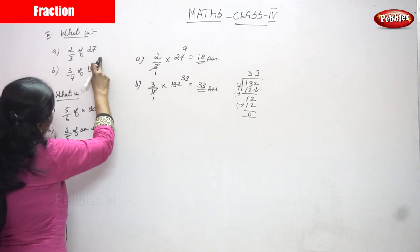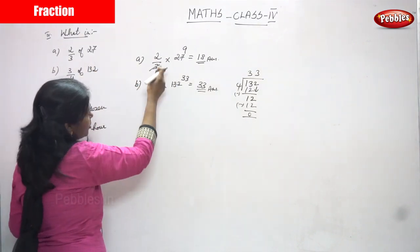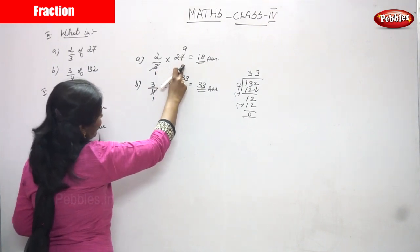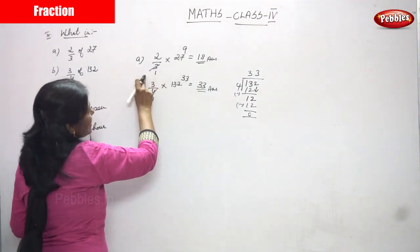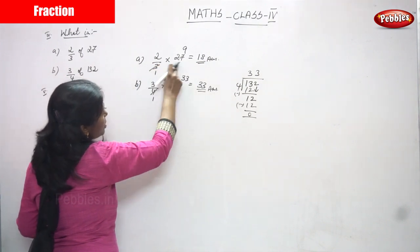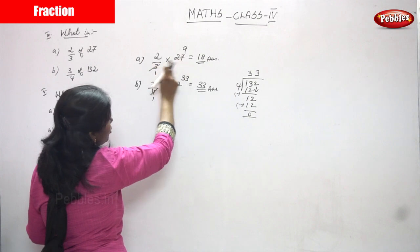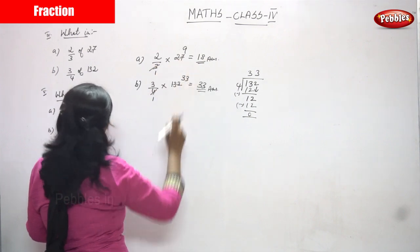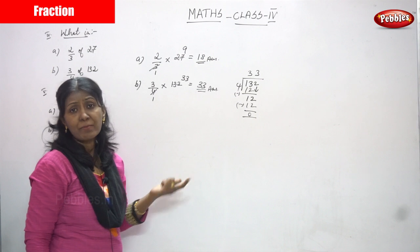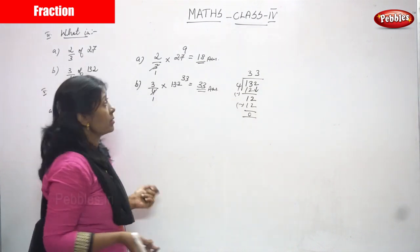So for the first sum: 2 by 3 into 27. '2 by 3 of' means you put a multiplication sign — into 27. Cancel by 3: 3 divided by 3 gives 1, and 27 divided by 3 gives 9. So 9 into 2 gives 18. That means 2 by 3 of 27 equals 18 — you can get 18 parts.